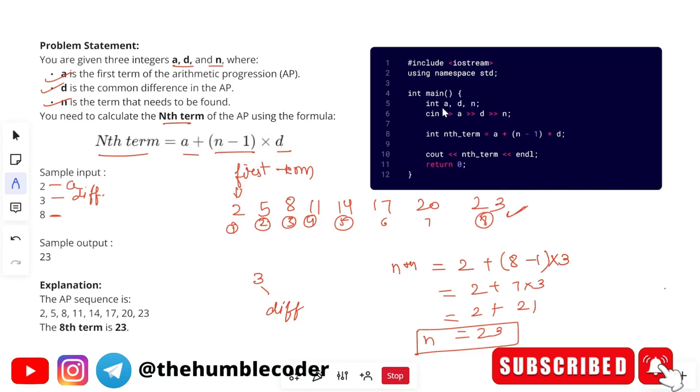So now let's see the code for it. In the code, we have three inputs, a, d, and n. We have already understood what these are. Then what we are doing, we are just creating an nth term variable. And then we are applying the formula that is a plus n minus 1 into d. And whatever the value that is when once final values will be substituted, and once the equation is solved, we will have the number in the nth term. So we will just simply see out the nth term. And then we will get the output as 23 or whatever the nth term is.